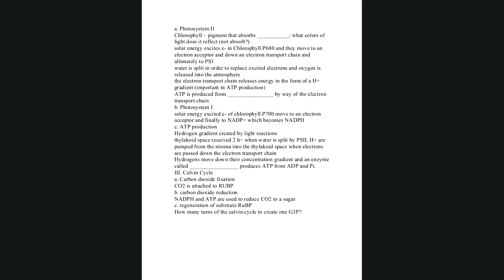This walks through the details of all the light reactions. ATP in the light reactions is produced from the proton gradient created by the electron transport chain. NADPH comes from Photosystem I. The hydrogen ions move down their concentration gradient and an enzyme called ATP synthase produces ATP from ADP and inorganic phosphate.